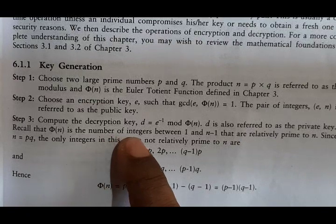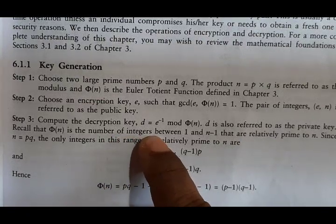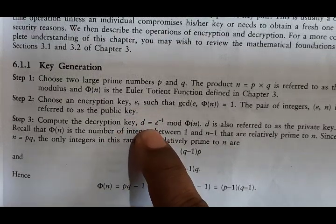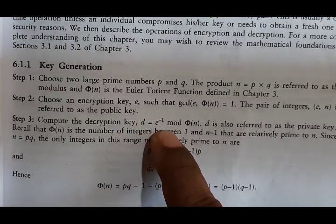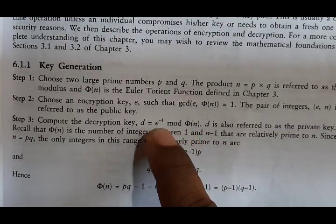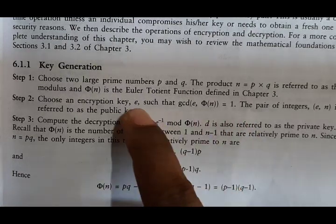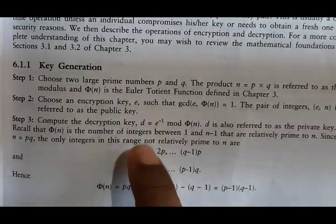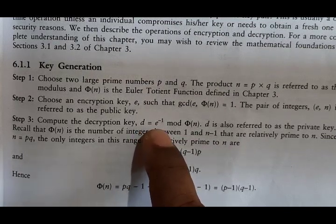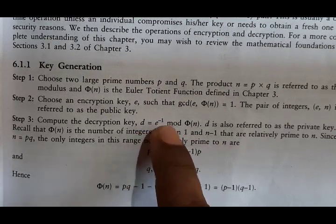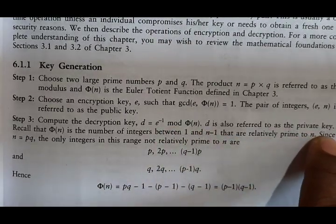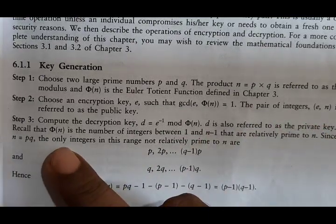Next, compute the decryption key D. D is equal to E inverse mod φ(N), meaning D·E ≡ 1 mod φ(N). You calculate E in step 2, and in step 3 you calculate D such that E inverse mod φ(N) holds. D is referred to as the private key.